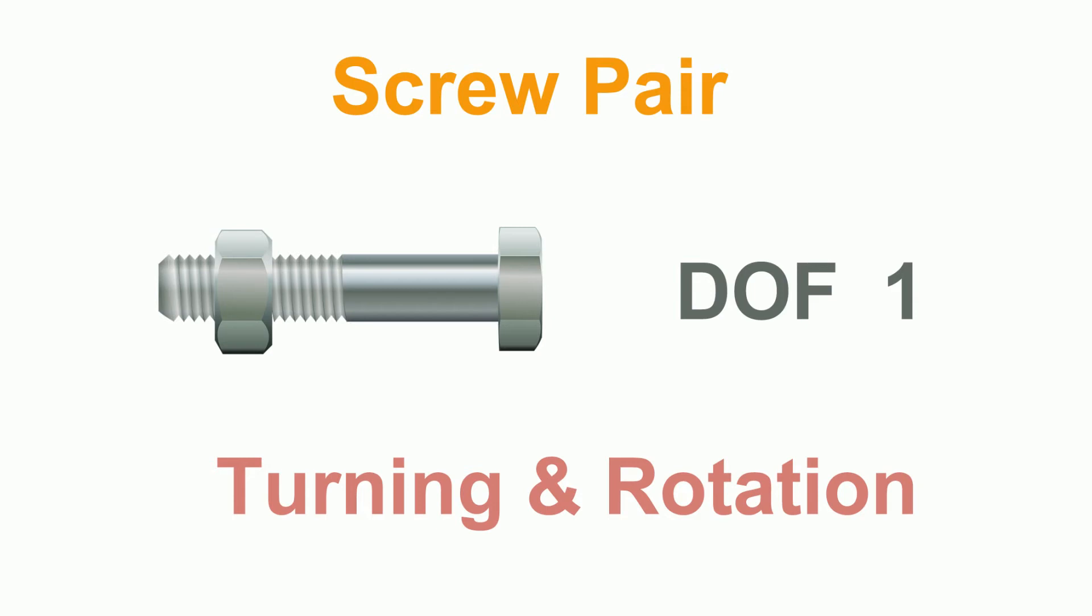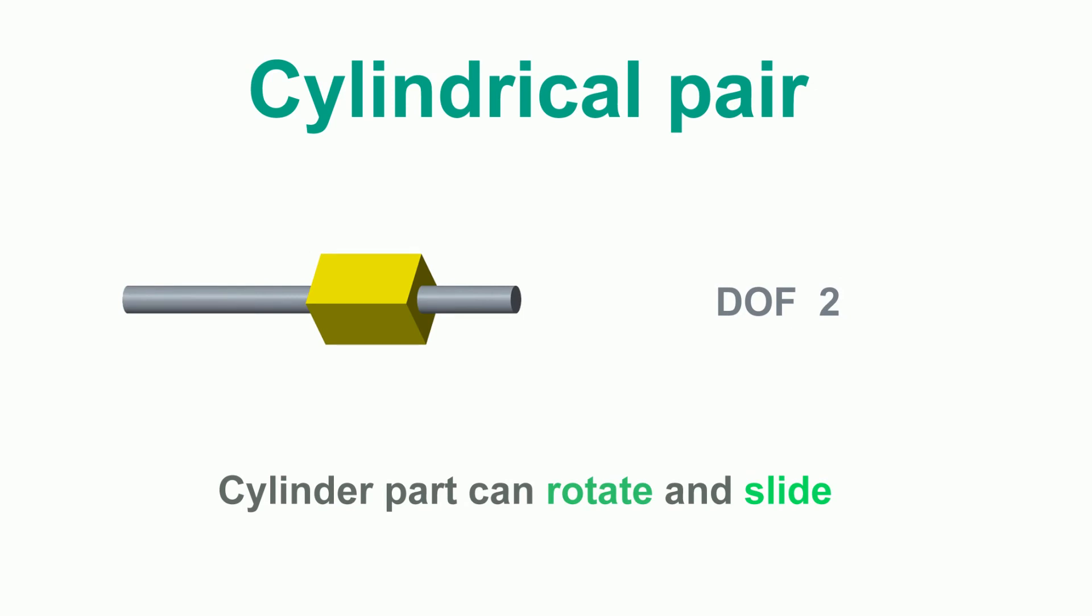Four, in a cylindrical pair, it can slide and rotate over the other, so it has two degrees of freedom.